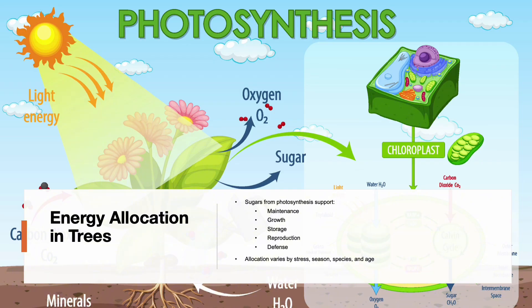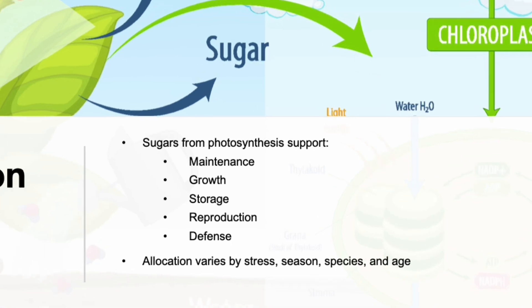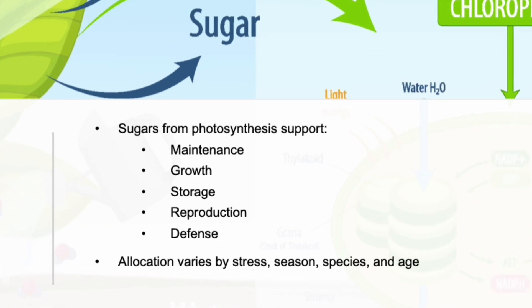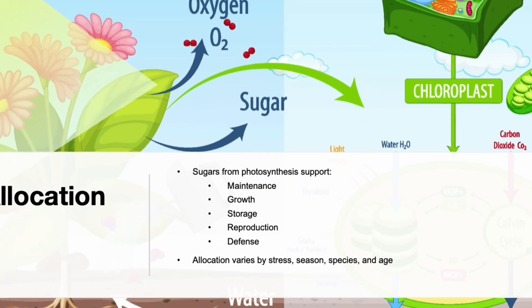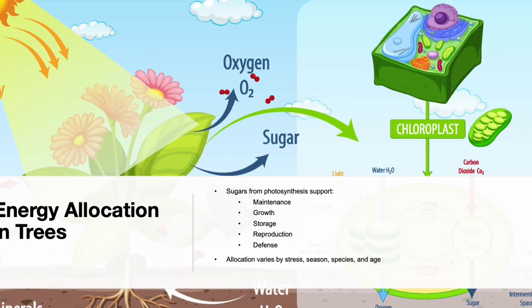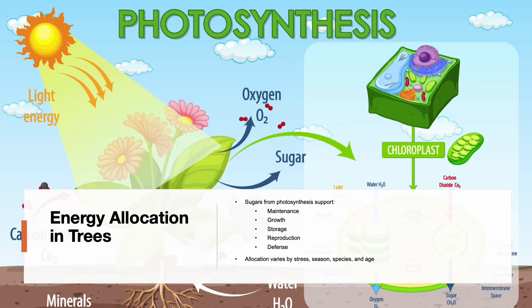Trees use sugars produced through photosynthesis to power five main functions: maintenance, growth, storage, reproduction, and defense. How they distribute energy between these functions depends on their age, health, environment, and stress levels. Understanding this helps us tailor care practices to what the plant really needs.